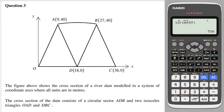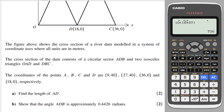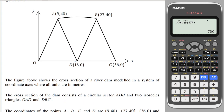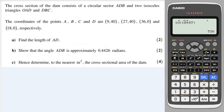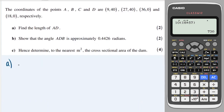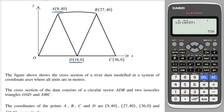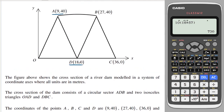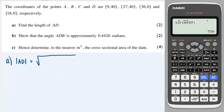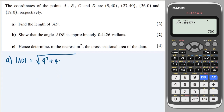Question 3: given coordinates and a picture of a dam, find the length AD. Using Pythagoras: the gap between the x-coordinates is 9 and between the y-coordinates is 40, so |AD| = √(9² + 40²). This is a Pythagorean triple, giving |AD| = 41.